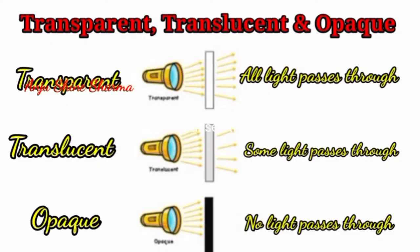We can understand all three types of objects by this picture. Transparent objects allow all light to pass through them completely. Translucent objects allow only some light to pass through them, and opaque objects do not allow light to pass through at all.